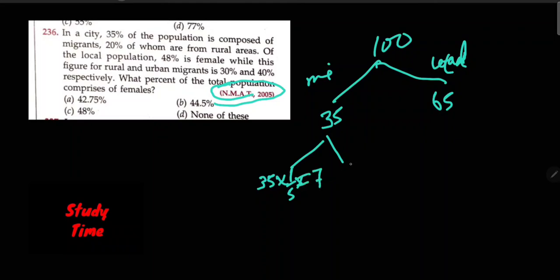Of the local population, 48% is female, while this figure for rural and urban migrants is 30% and 40% respectively. So 65%, and 48%...